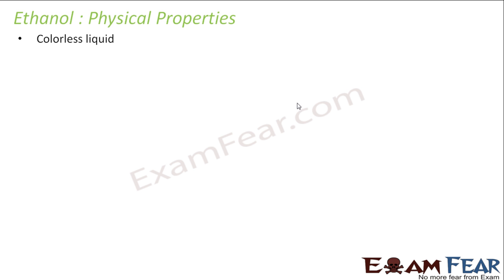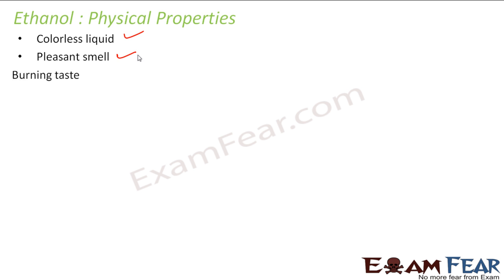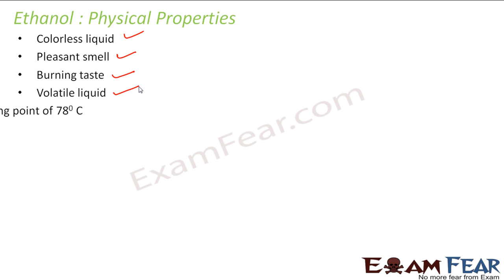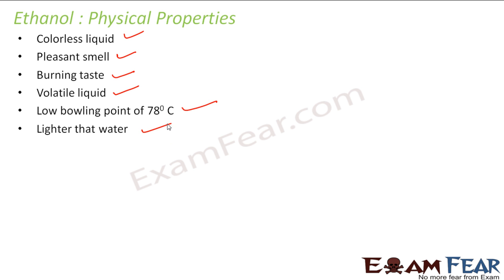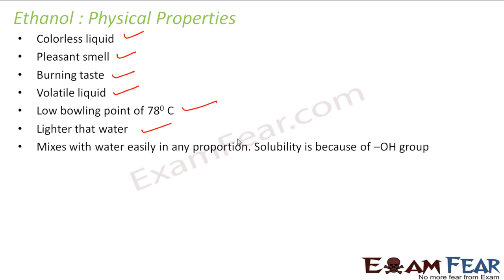Ethanol has some physical properties. It is a colourless liquid. It has a pleasant smell. It has a burning taste. It is a volatile liquid. It has a low boiling point of 78 degrees Celsius. It is lighter than water. It mixes easily with water in any proportion — even 90 percent ethanol and 10 percent water will mix.